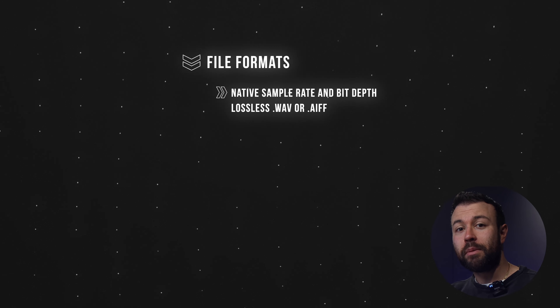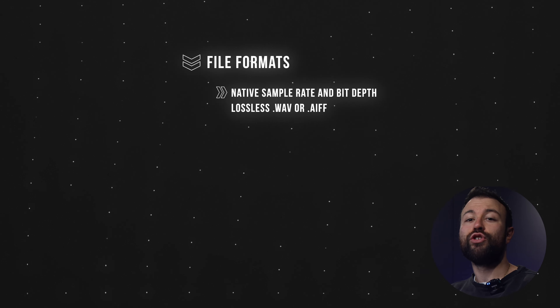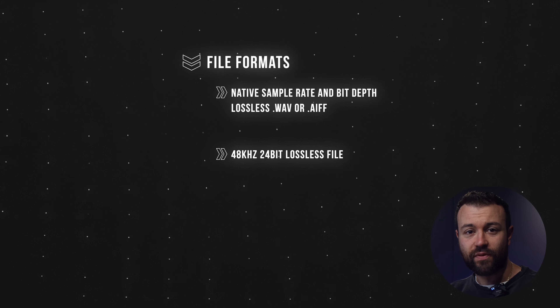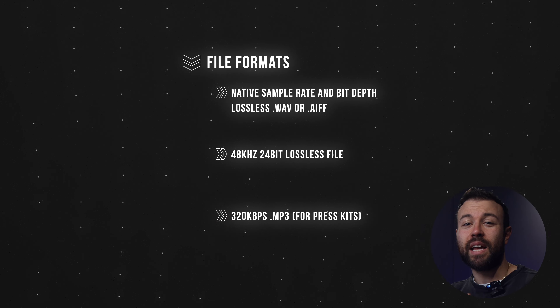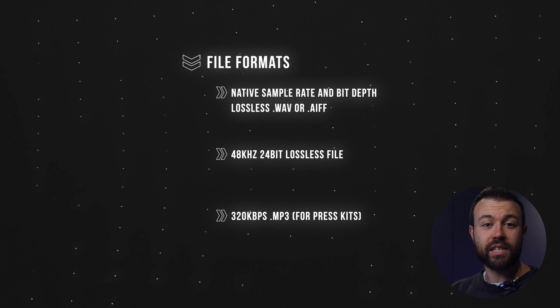Moving forward, at a minimum, if it isn't already native to the session sample rate, you should also deliver a 48K 24-bit lossless file, as well as a 320 kilobit MP3. That MP3 is for press kit purposes — it's simply an industry standard. Most publishers I've worked with hold their archive at 48/24, and most PR agencies use MP3s for email purposes and attachments on form submissions.